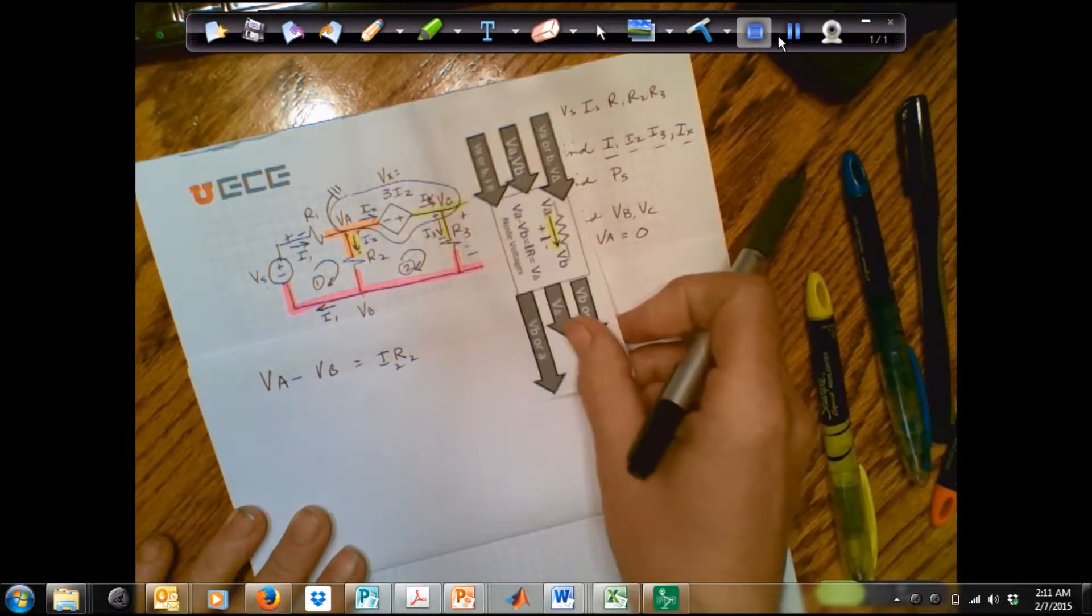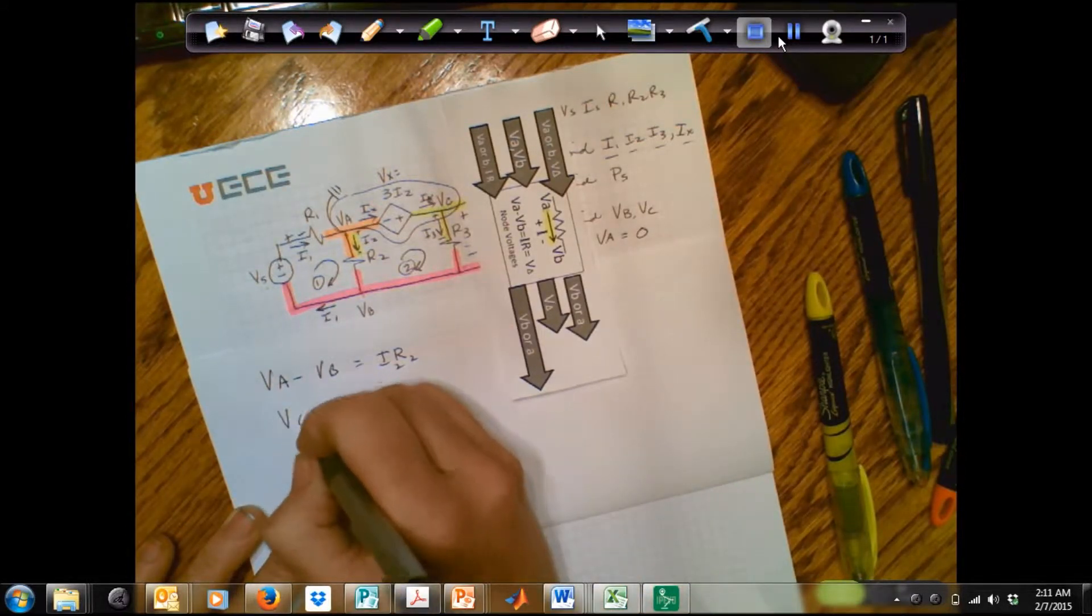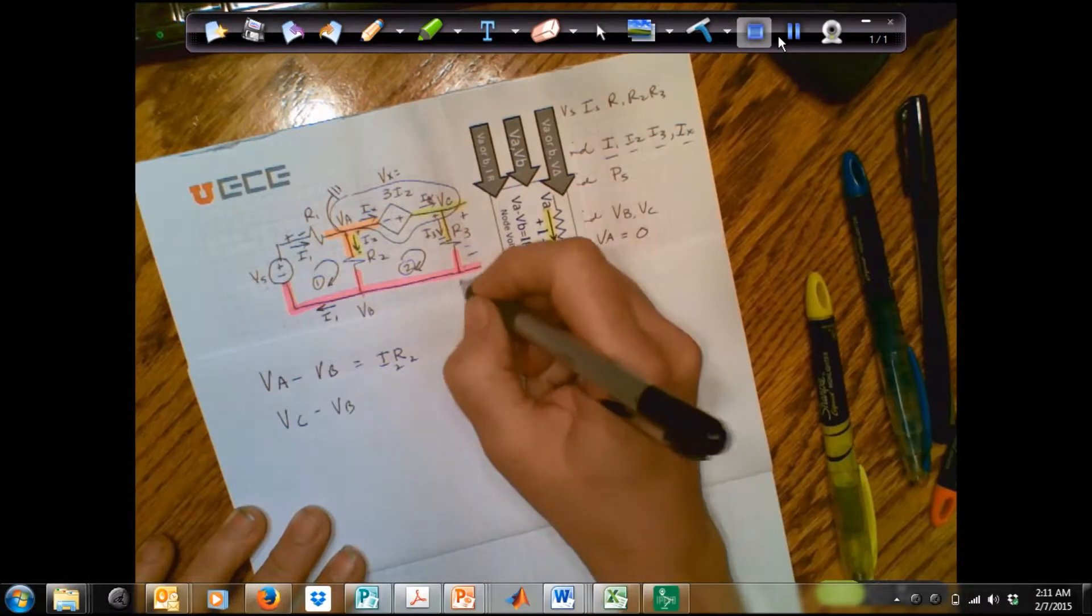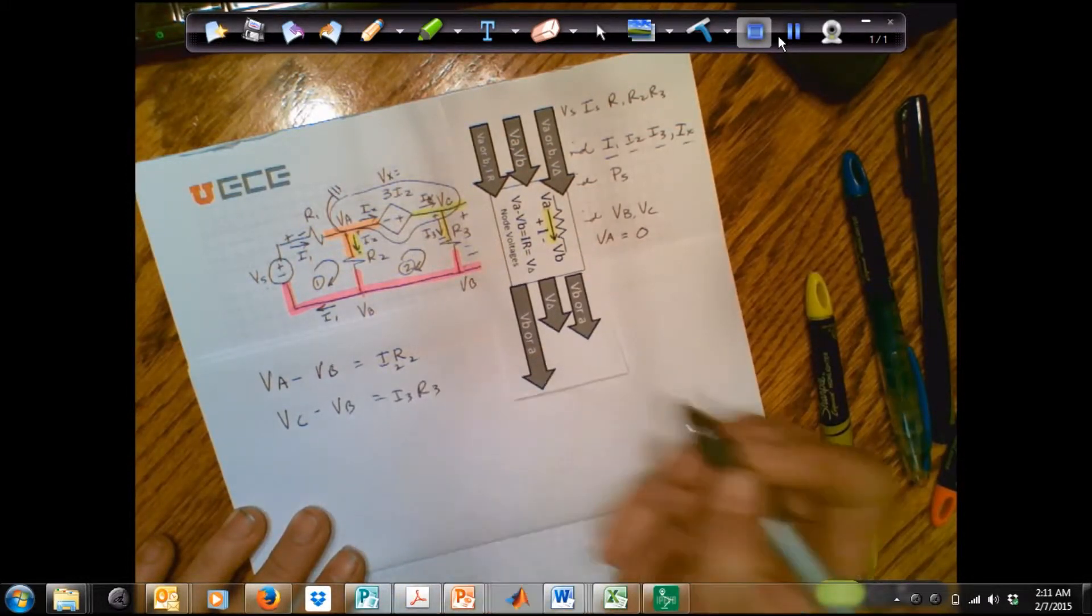Let's do that over here too, for VC. VC minus VB, because this is equal to VB, it's all pink, is equal to I3 times R3.